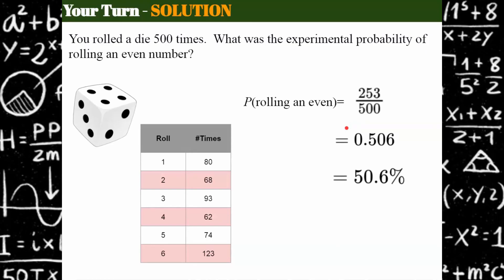Divide and then write it as a percent. So 50.6% of the time, I rolled an even number. Now, let's compare this to theoretical probability. In theory, I would expect that half of these rolls were even. Look how close we got.